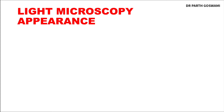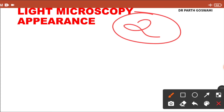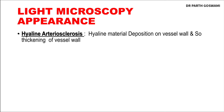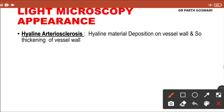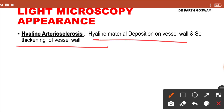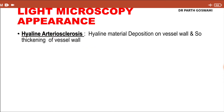There are two light microscopic changes seen in nephrosclerosis. The first is hyaline arteriosclerosis — a thickening of blood vessels by hyaline material deposition. Due to endothelial damage, plasma protein leaks and deposits as hyaline material, thickening the blood vessel wall. This is known as hyaline arteriosclerosis.